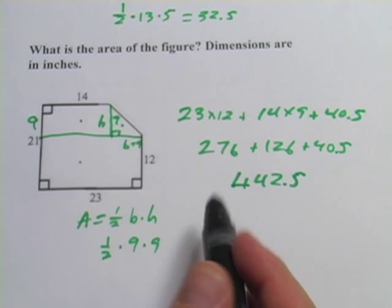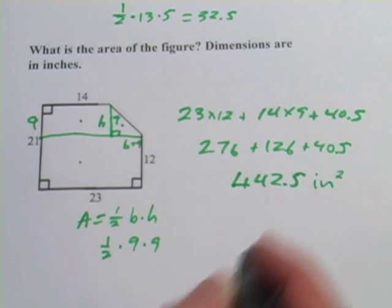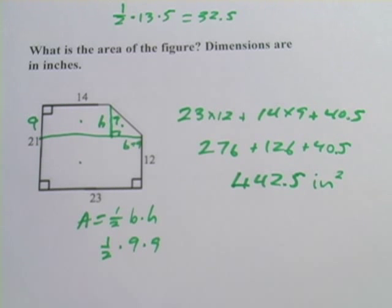It said dimensions were in inches. This is area, so it's going to be square inches. So those are some problems with finding the area of complex shapes.